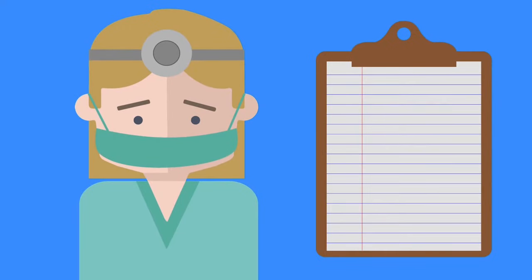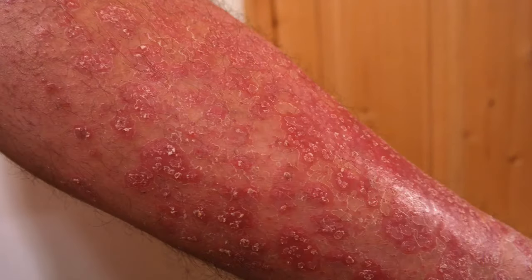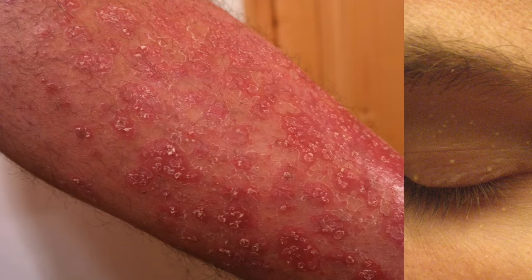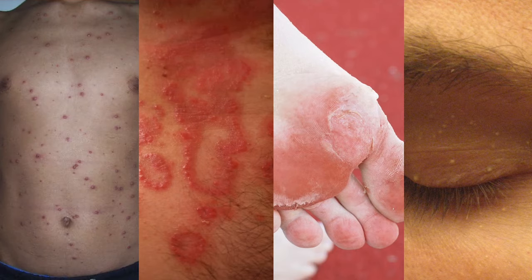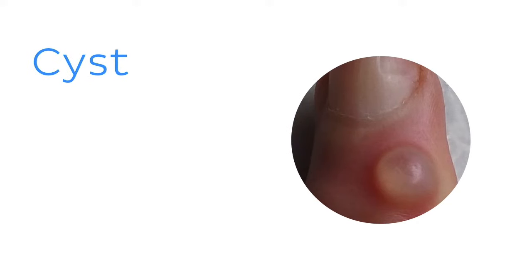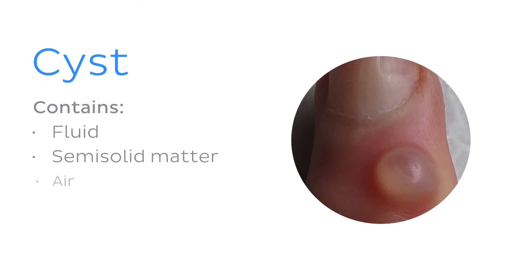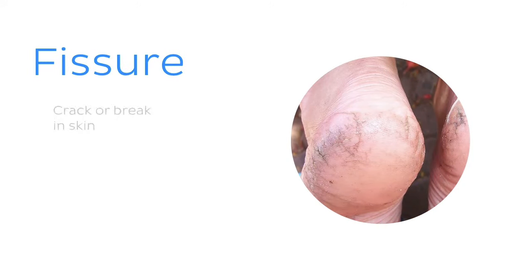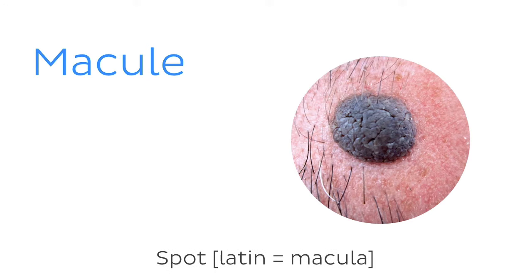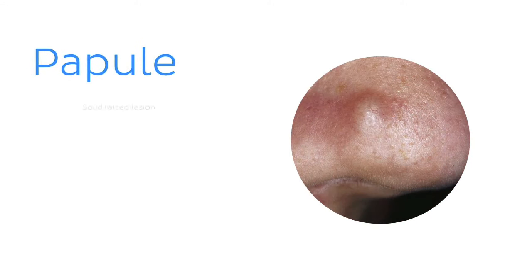Let's move on to practical terminology you might encounter in clinical practice. Many diseases are characterized by changes in skin quality or various types of lesions. A cyst is a small sack or pouch underneath the skin containing fluid, semi-solid matter, or even air. A fissure is a small crack or break in the skin, most often seen in thick skin like the sole of the foot. A macule is a discolored flat lesion — for example, freckles and moles. A papule is a solid raised lesion with no visible fluid that often forms as part of a rash.